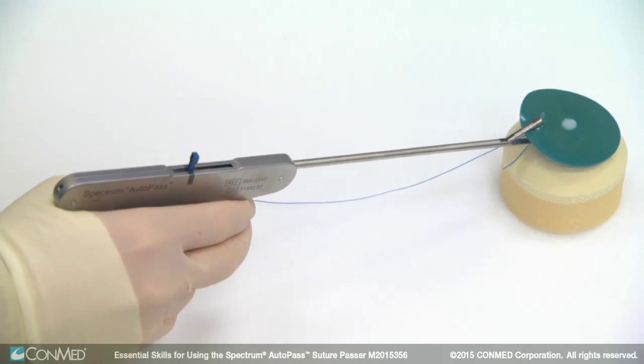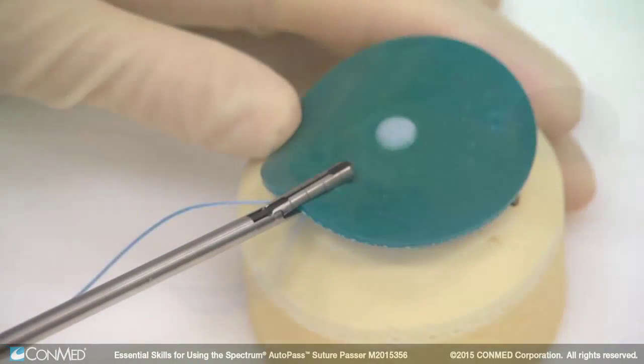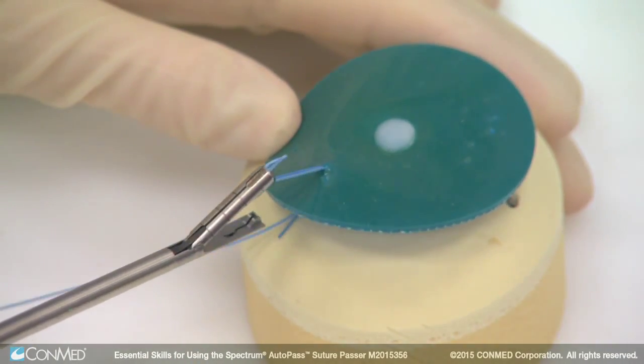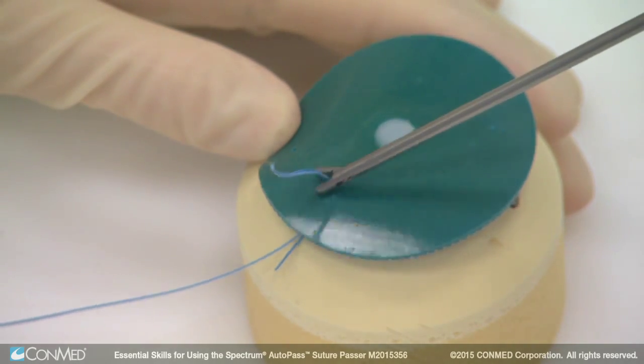At this point, the Spectrum Autopass can be pulled back with the suture, or the trapdoor can be opened in the joint to release the suture for retrieval out of another portal.